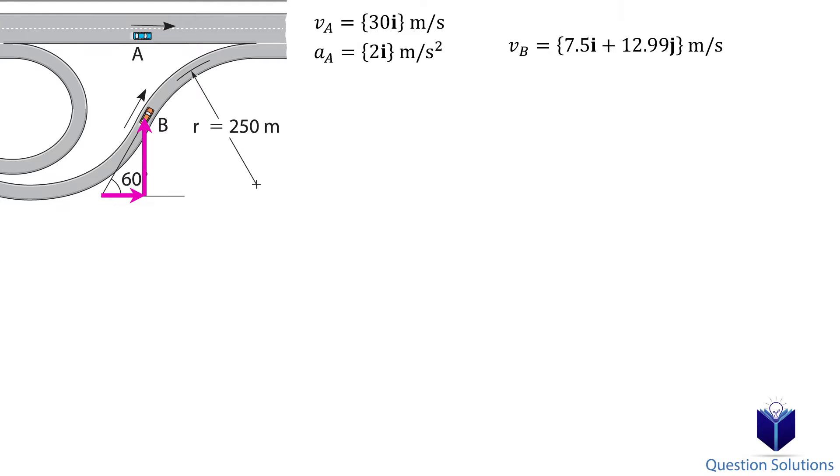For acceleration it's a bit more complicated. The car is traveling along a curve which means we will have tangential acceleration and normal acceleration. So let's find those first. The tangential acceleration is 0.8 meters per second squared which is given to us in the question.